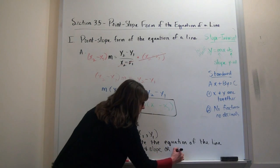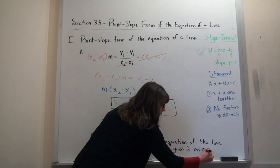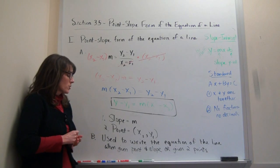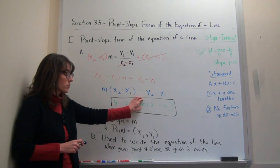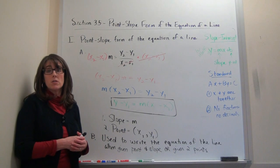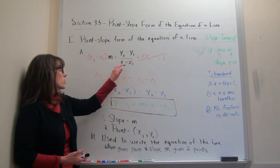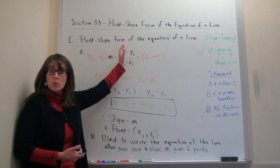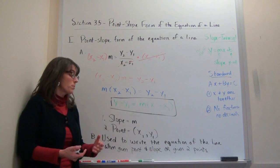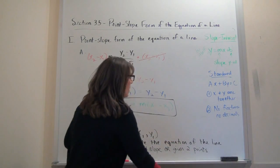Point-slope can also be used when you're given two points to write the equation of the line. You might wonder: if I'm only given two points and not the slope, what do I do? But if you're given two points, you can calculate the slope using the slope formula — subtract the y's on the numerator, subtract the x's on the denominator. Then you'll have your slope and two points to choose from.